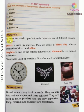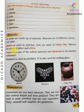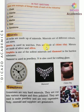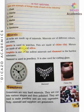Now, minerals. All rocks are made up of minerals. Minerals are of different colors and sizes. Quartz is used in watches. Pots are made of china clay. Mirrors are made up of silver and silica — the mirrors we use at home are mostly made up of silver and silica.